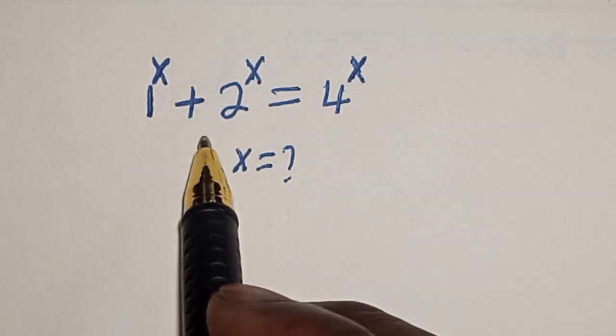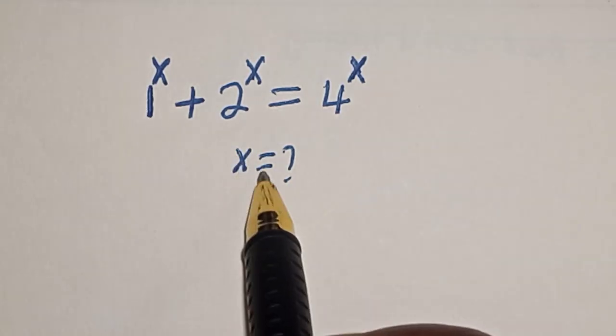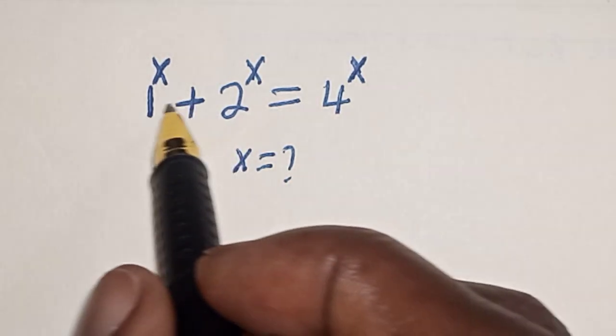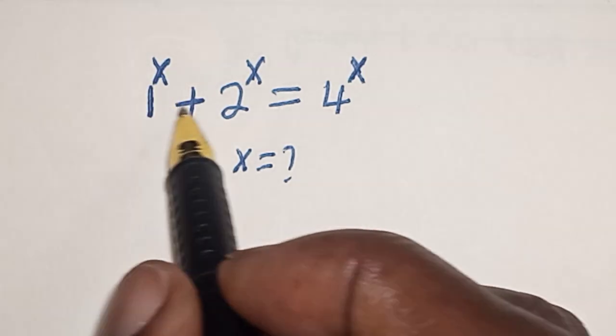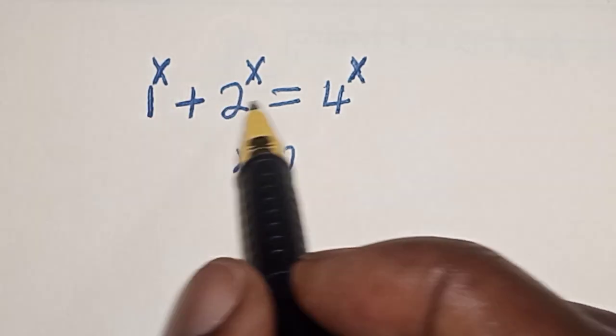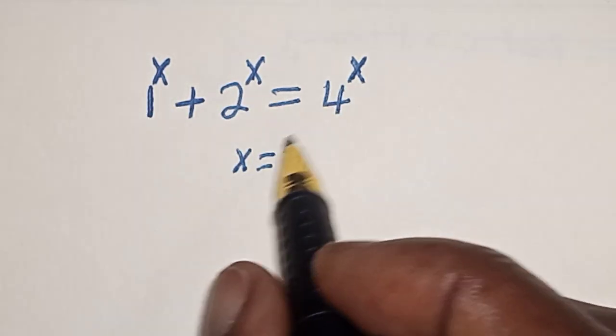Hello, welcome to Magis. In this class we want to find the value of s from this equation: 1 raised to the power s plus 2 raised to the power s is equal to 4 raised to the power s.